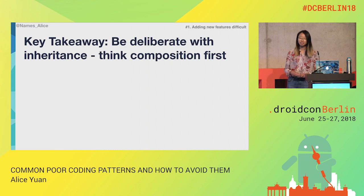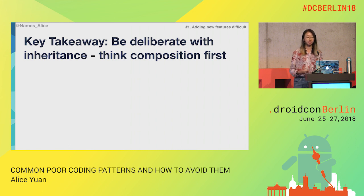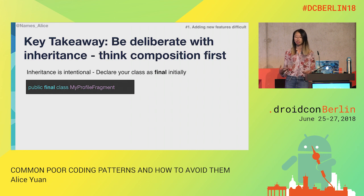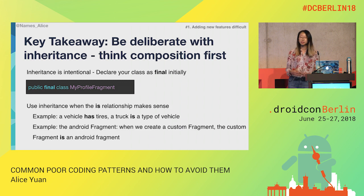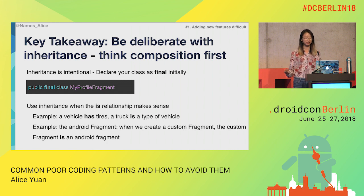Our key takeaway here is that we should be deliberate with inheritance. We should think about using composition first. In order to do this, we should be intentional about how we declare our class, annotating it with final — or in Kotlin, it's already closed from the get-go. We should use inheritance when the 'is' relationship makes sense. As an abstract example, a vehicle has tires, and a truck is a type of vehicle. And in our Android fragment, we use inheritance when creating custom fragments.